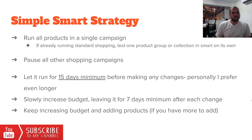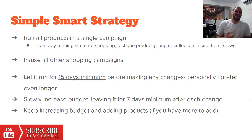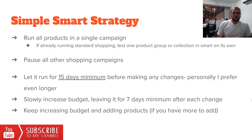Let it run for a minimum of 15 days — two weeks plus before making any changes. I personally prefer 30 days before making any changes. Slowly increase the budget, leaving it for seven days minimum after each change. If something is chewing up your spend before the 30 days and everything's going into one product, just remove it. Smart tends to spread the budget more at the start compared to a standard campaign. Any change you make, keep it small — around 10 to 20% budget increases — then leave it for another seven days.